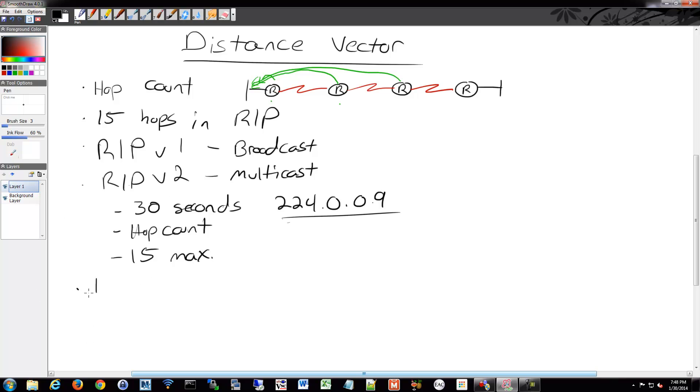Obviously, you have to be listening to this multicast address in order to receive RIP version 2. There's also that IGRP, as I mentioned, and EIGRP.